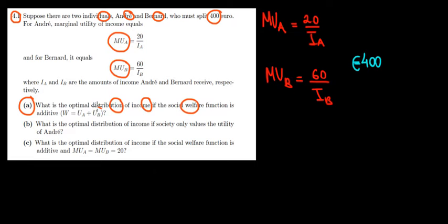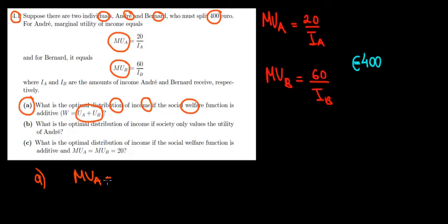The intuition here is an analogy with what we did in basic micro. Whenever a consumer wants to split consumption of, say, apples and bananas, the distribution goes until the marginal utility from the last apple equals the marginal utility from the last banana. By definition, we cannot do any better because if we have more utility from consuming one good, we would spend more money on that.